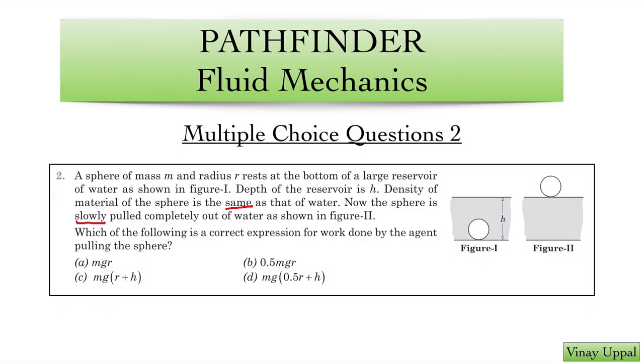What is the question asking? The question is asking which of the following is the correct expression for work done by the agent pulling the sphere. There is an external force that is pulling the sphere upwards and we need to find the work done by the external force.